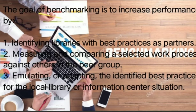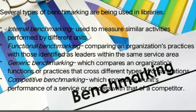The goal of benchmarking is to increase performance by identifying libraries with best practices as partners, measuring and comparing a selected work process against others in the peer group, and emulating or adapting the identified best practices for the local library or information center situation. Several types of benchmarking are being used in libraries. First, internal benchmarking — used to measure similar activities performed by different units. Second, functional benchmarking — comparing an organization's practices with those identified as leaders within the same service area.